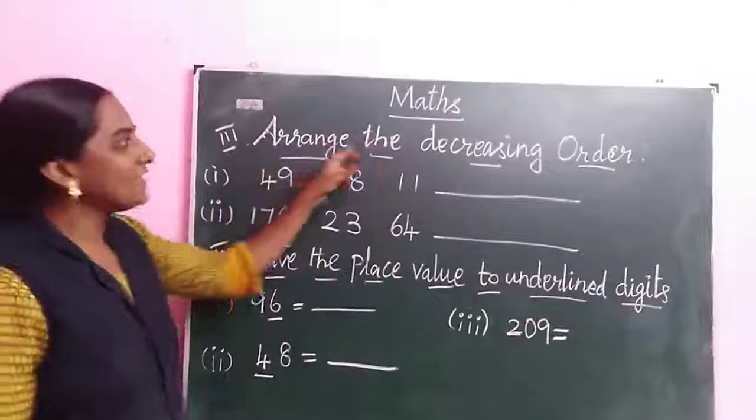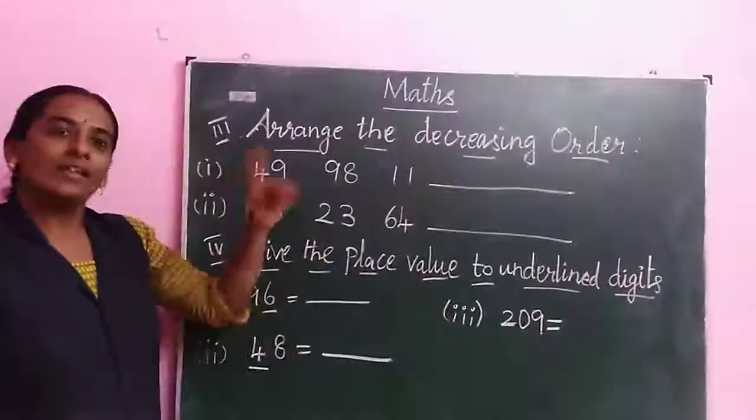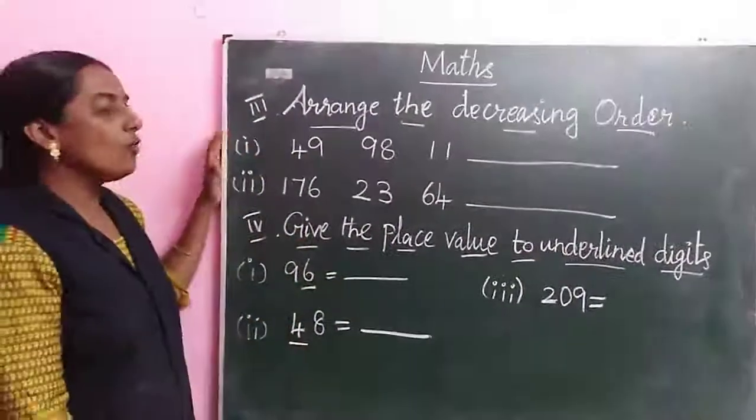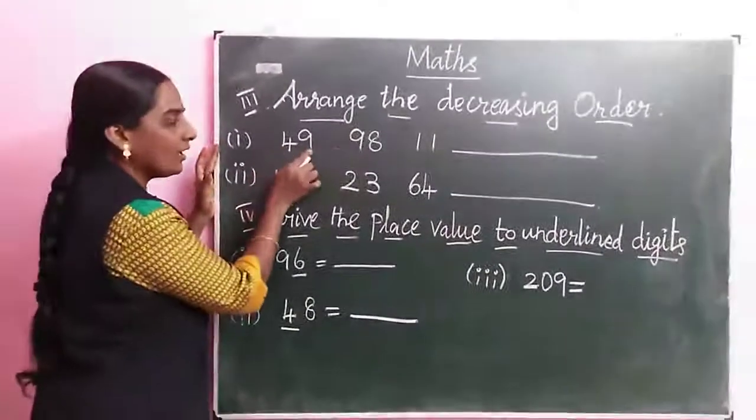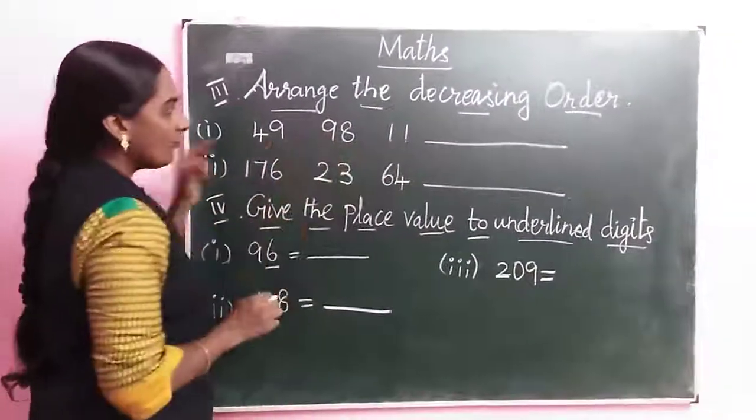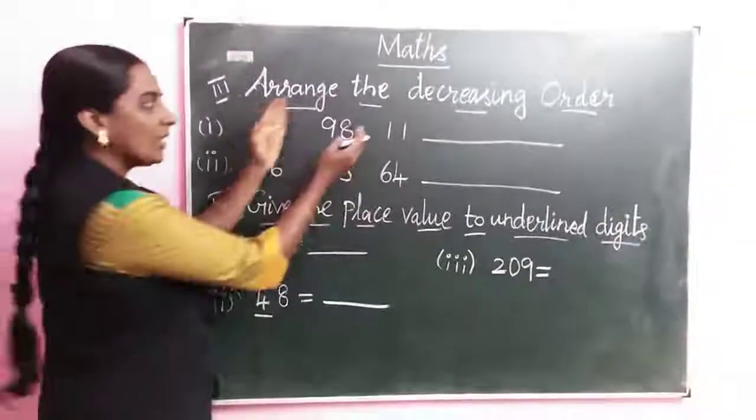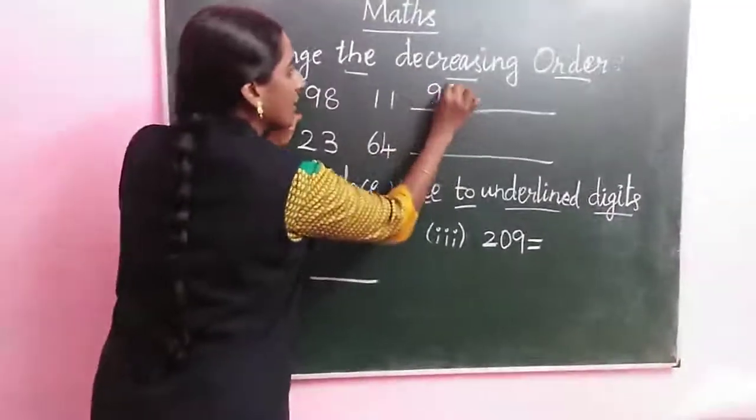Next, arrange in decreasing order. Last title was increasing, going small to big. Now, big to small. First question: 49, 98, 11. Now which is the big number? 98. So first we are writing 98.